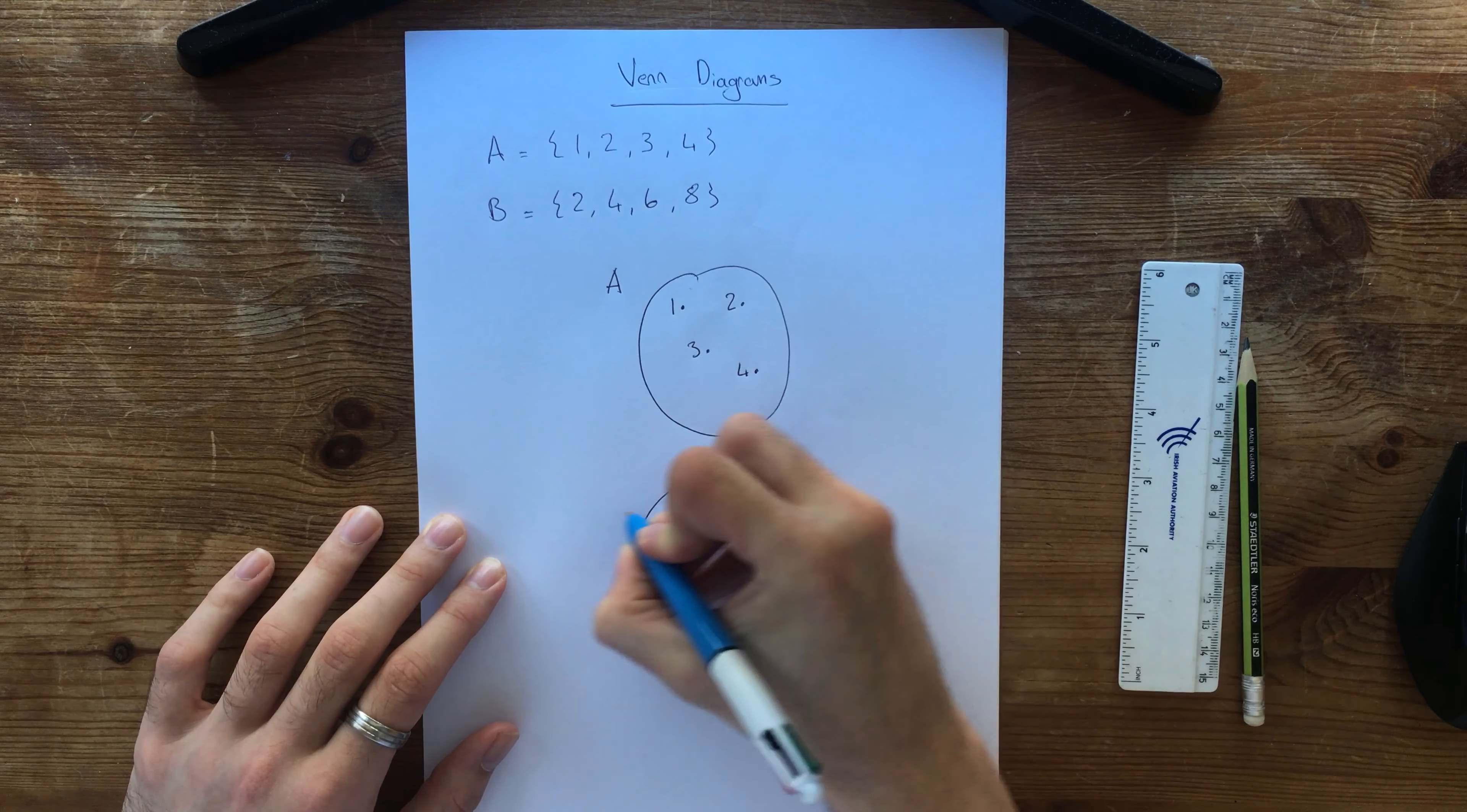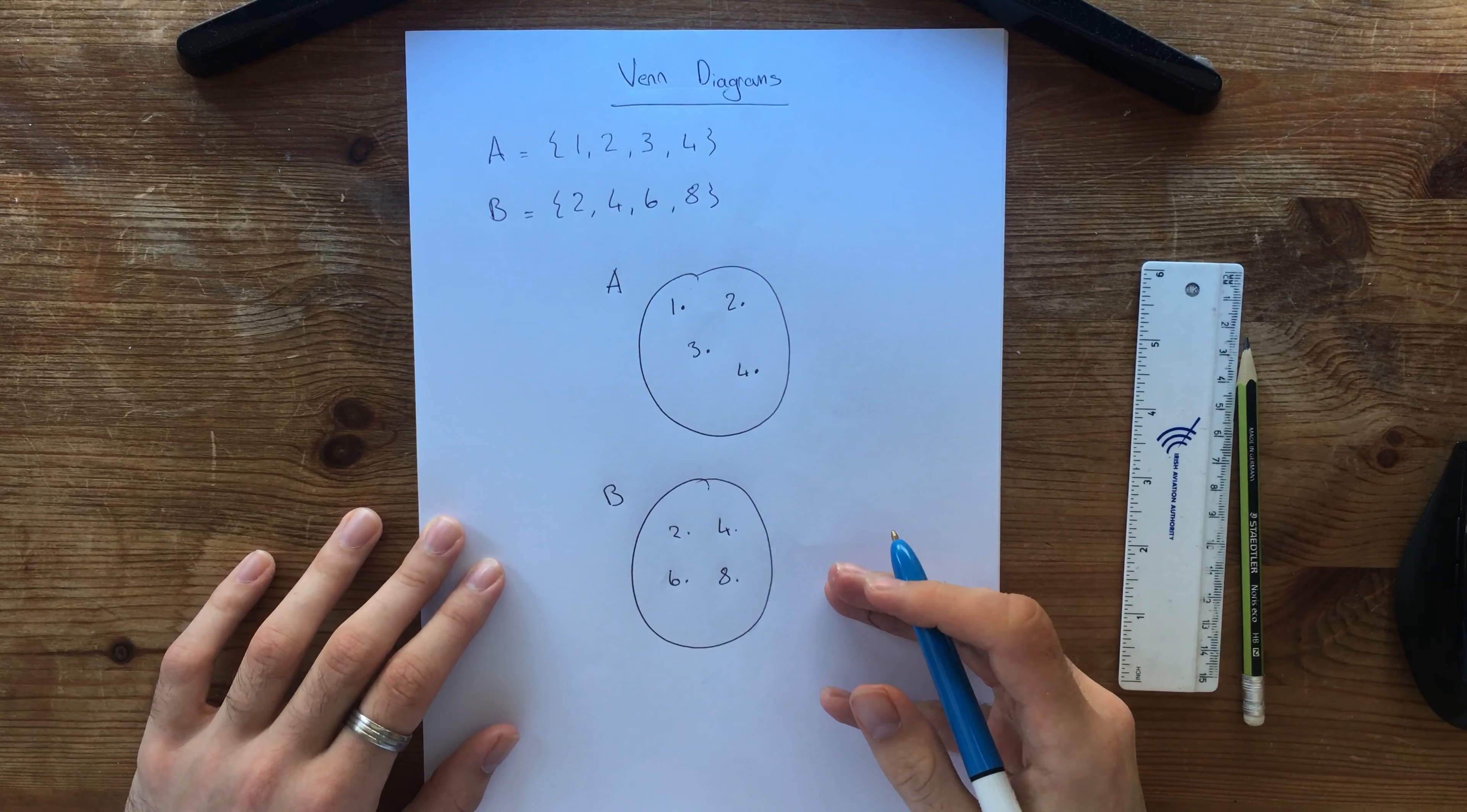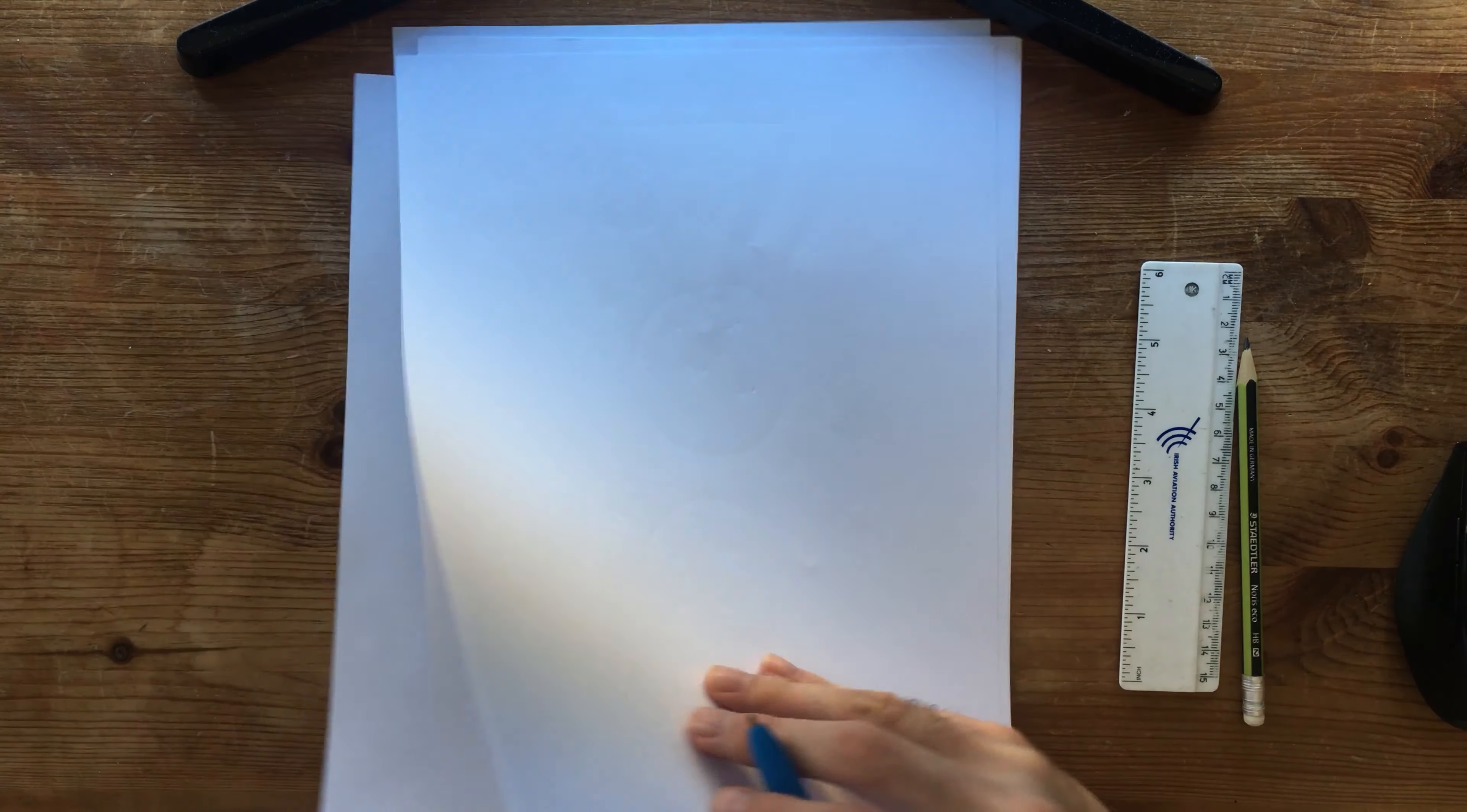Okay, and we can do the same for B. So we'll do B down here. So B is down here and it's 2, 4, 6 and 8. Okay, so that looks great but it doesn't really tell us much. So let's take what we've done there and actually turn it into two sets together.